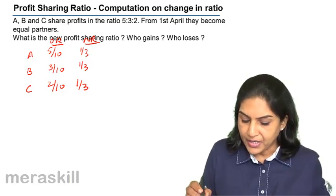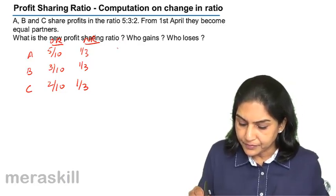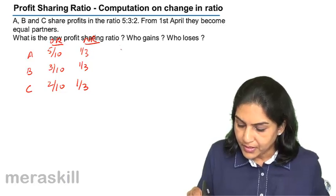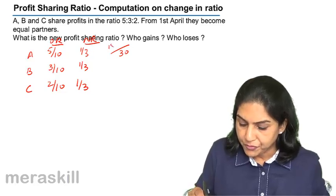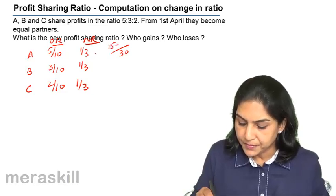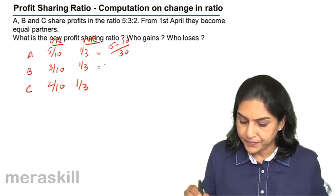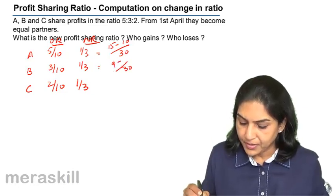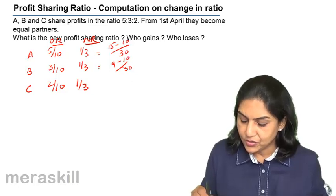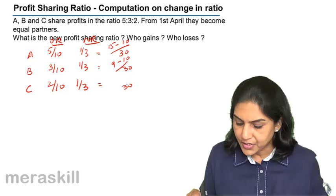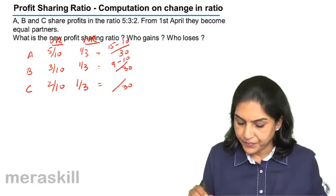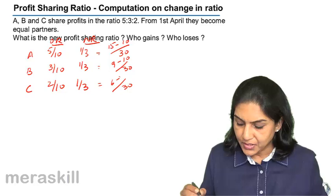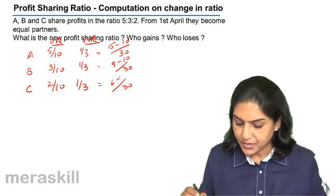5 by 10 minus 1 by 3. Let us take 30. 15 minus 10, 9 minus 10. So this would be negative. Here you have got 30, 6 minus 10.